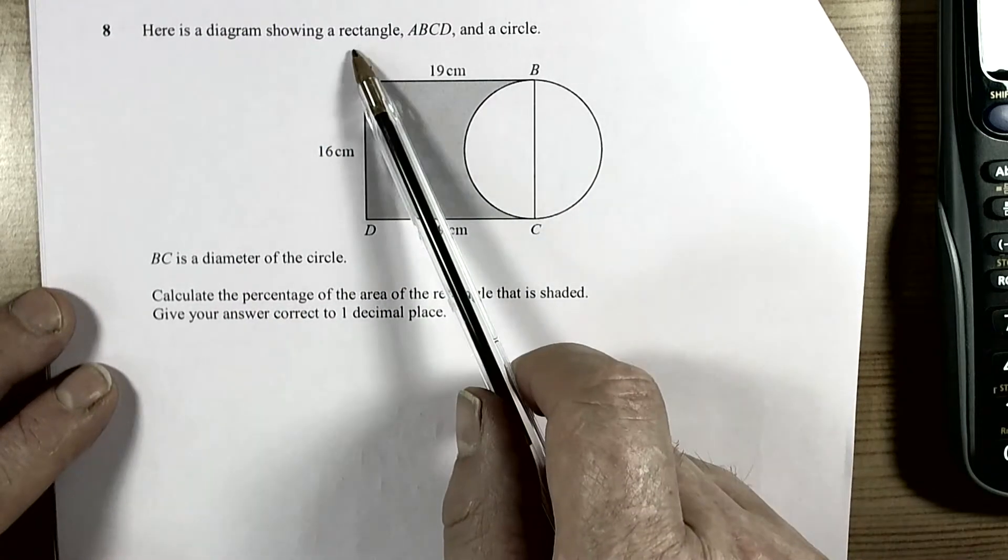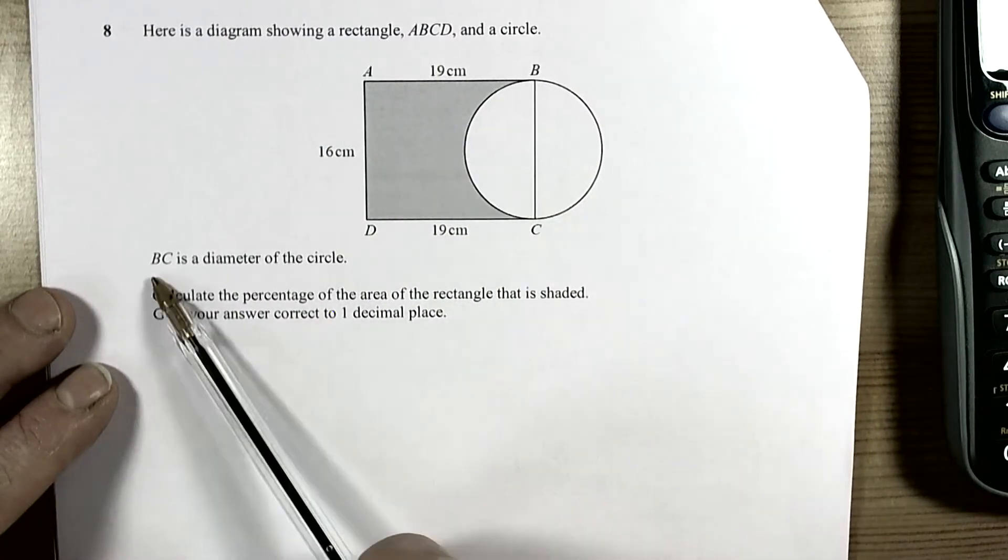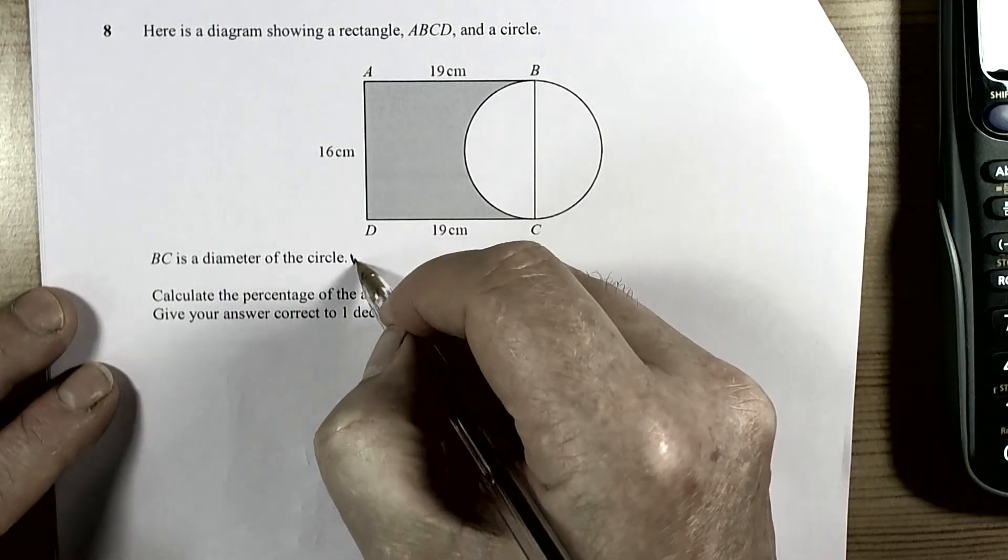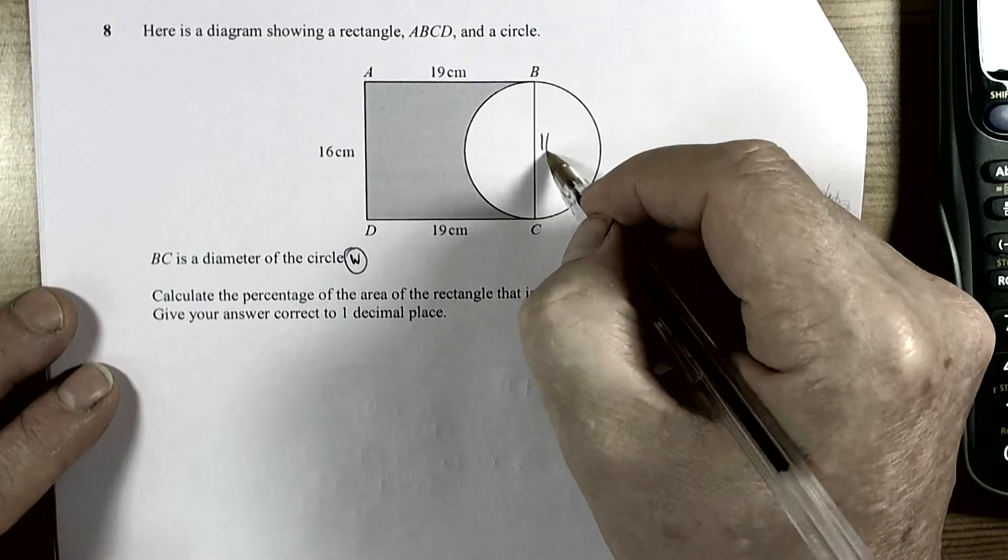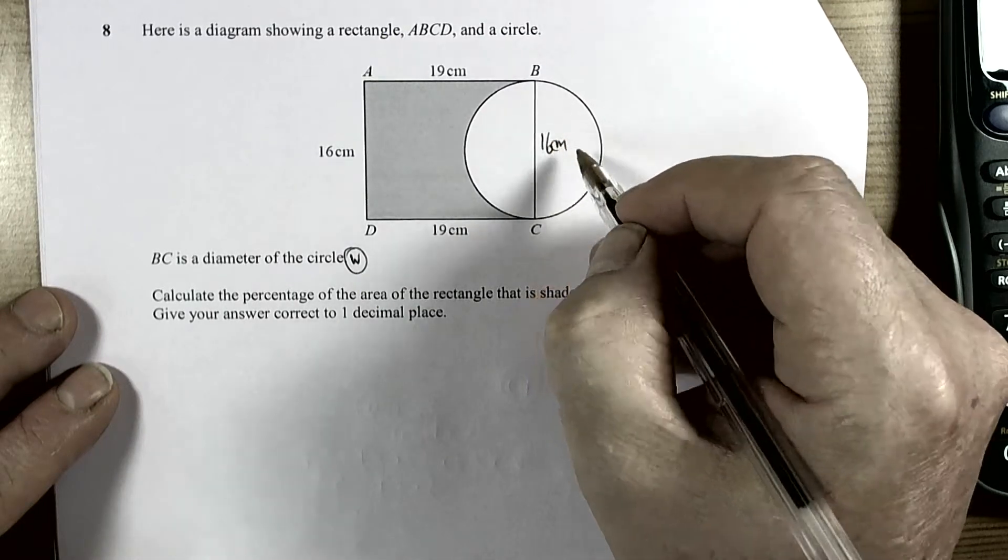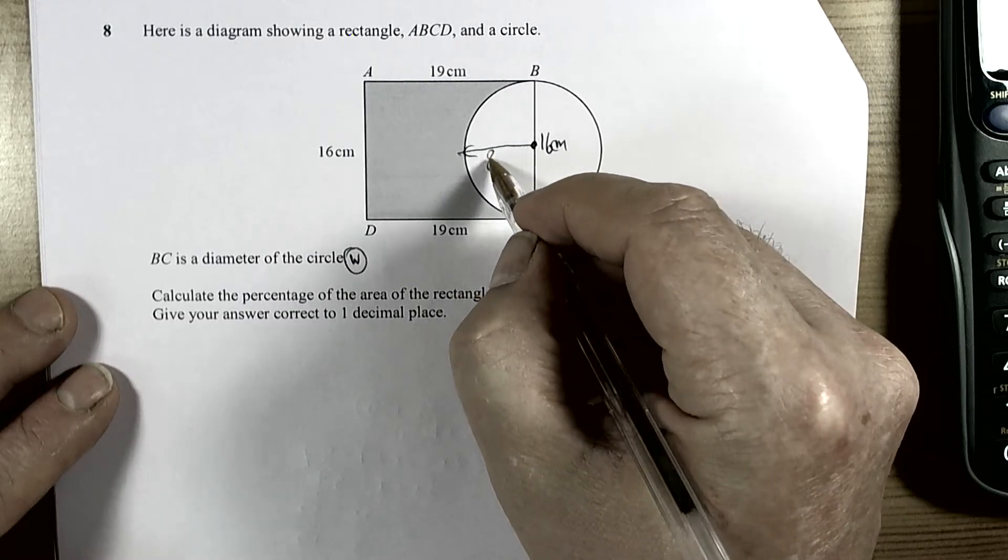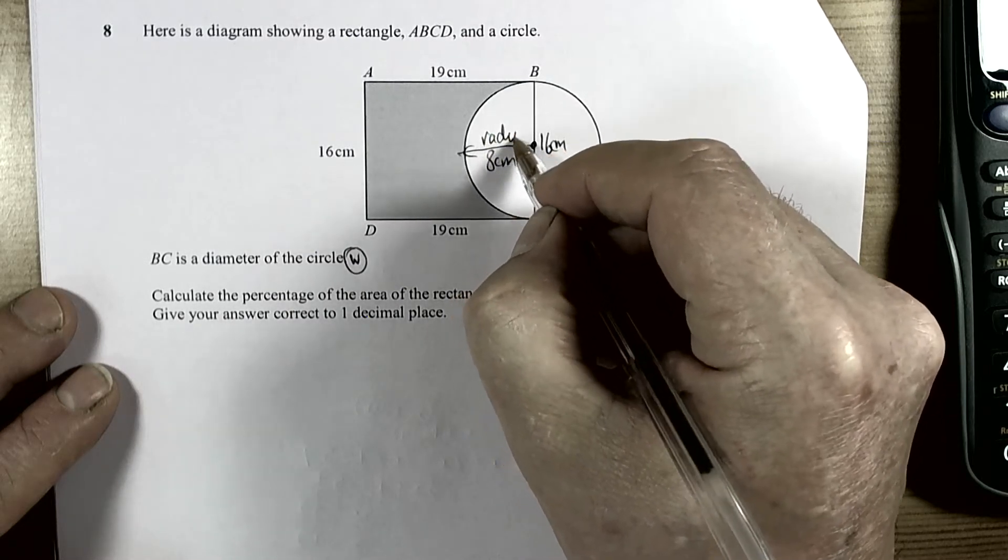I have a question here that involves a rectangle and a circle telling us that BC is the diameter. We know straight away from that, what do we know? We know that must be 16cm, therefore we know the radius of the circle must be 8cm, so the radius is 8.